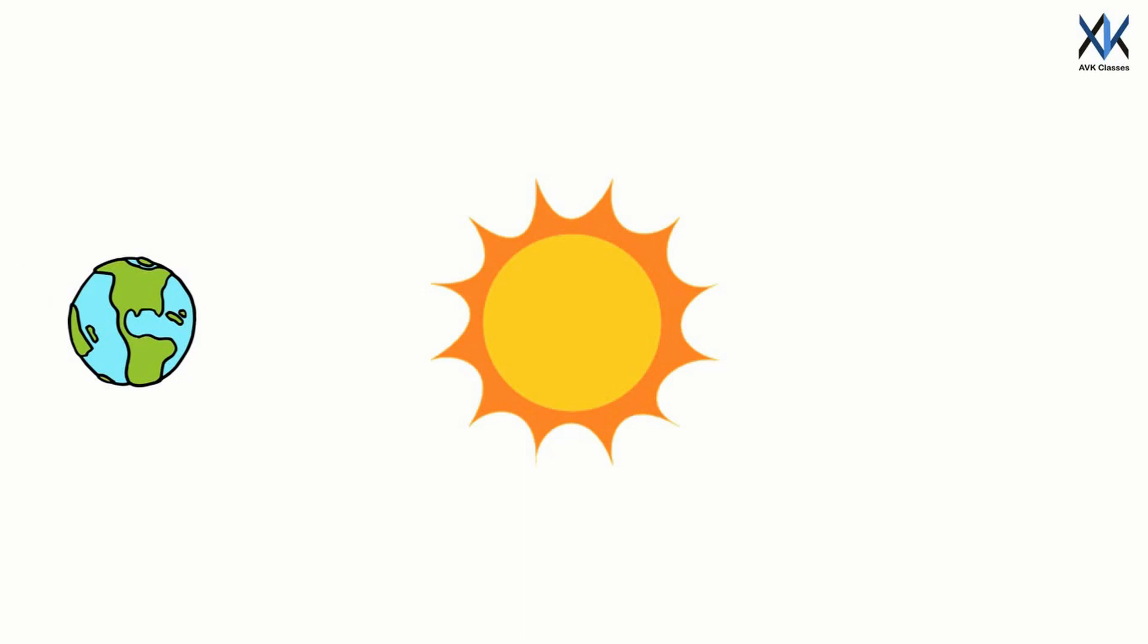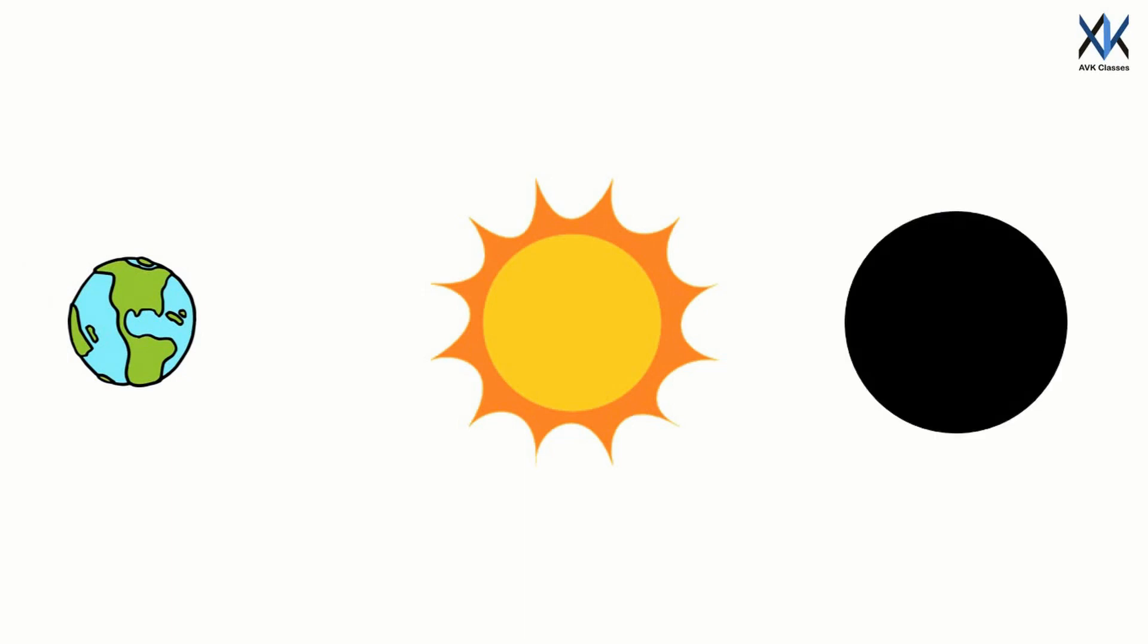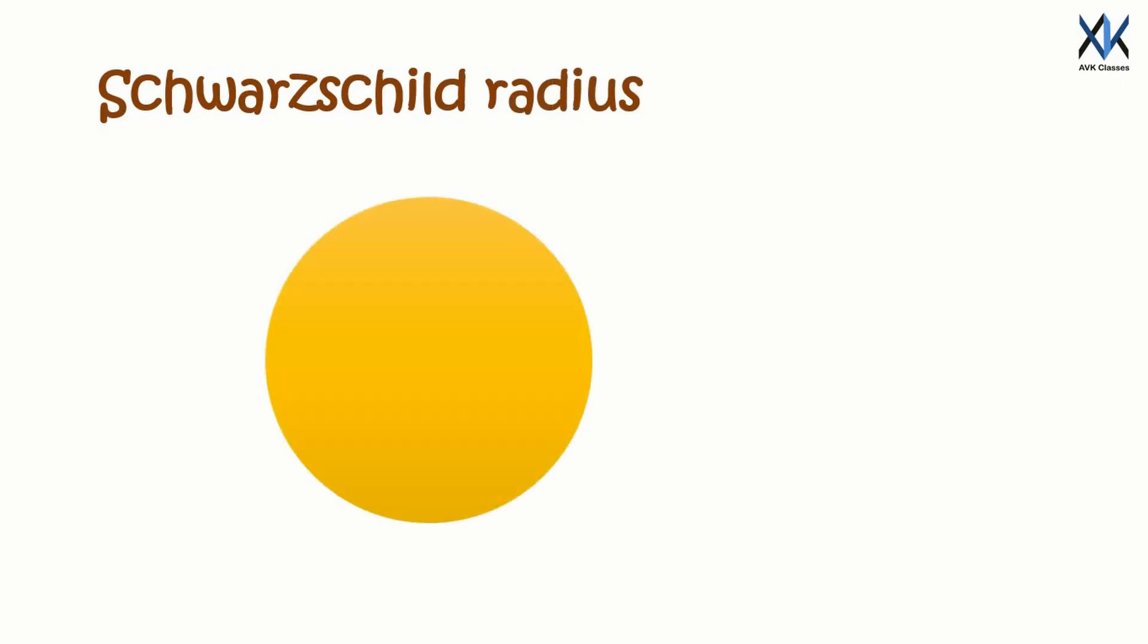The major difference between a black hole and a normal object is not that it is black in color but something related to its geometry, called Schwarzschild radius. What is Schwarzschild radius you may ask?